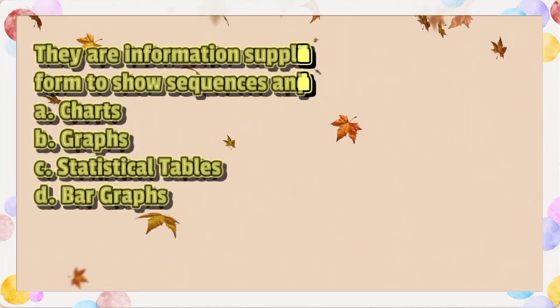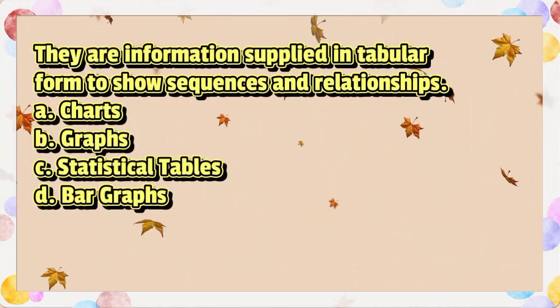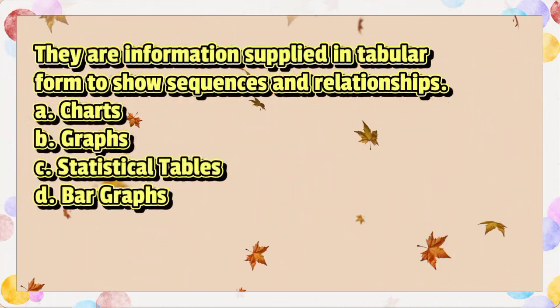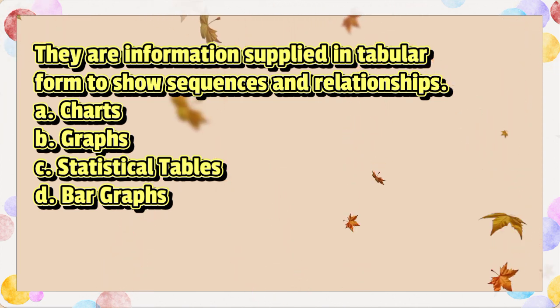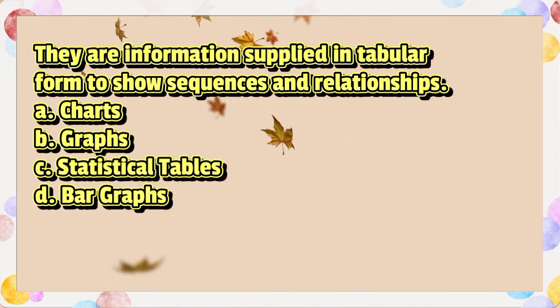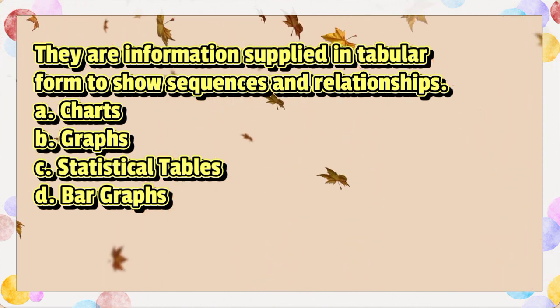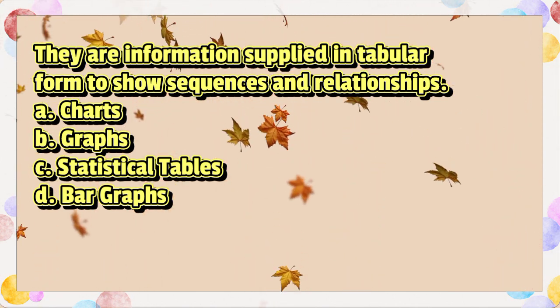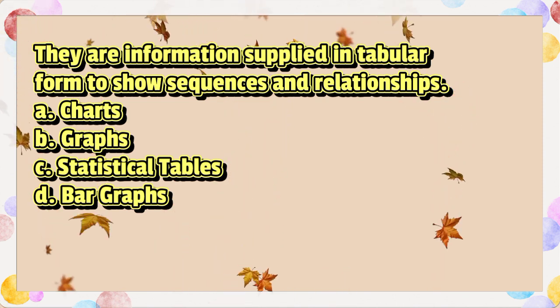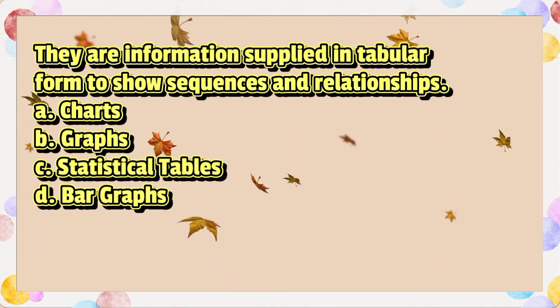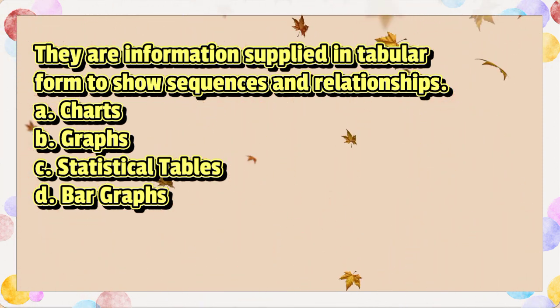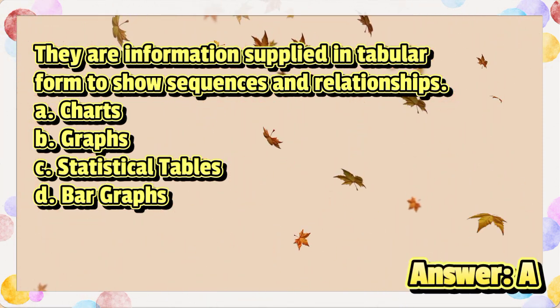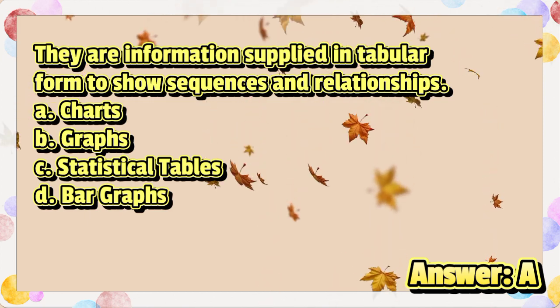They are information supplied in tabular form to show sequences and relationships. A. Charts. B. Graphs. C. Statistical tables. D. Bar graphs. The answer is letter A.